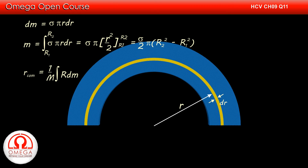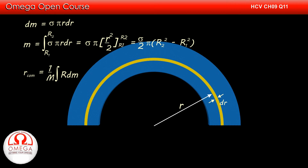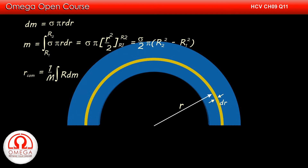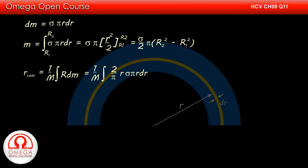The center of mass is given by the summation of mass times distance divided by total mass. But in this case, since we are dealing with infinitesimally small quantities, summation is integration. So the vertical position of the center of mass is the integration of mass times vertical distance, divided by total mass. The vertical distance of the center of mass of a semicircular ring from its center is 2r/pi, and the mass of our ring is sigma·pi·r·dr.